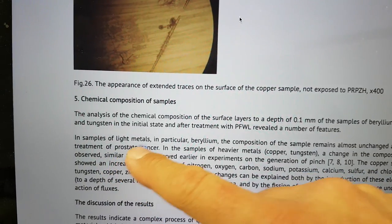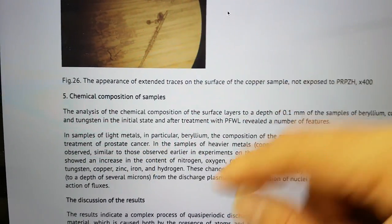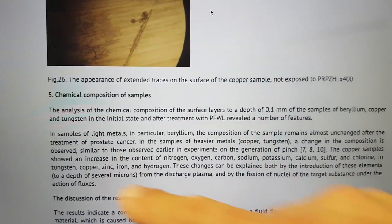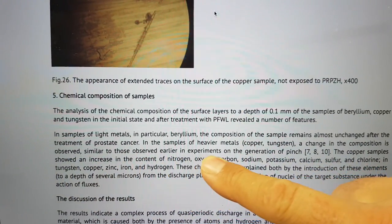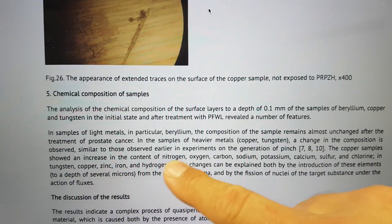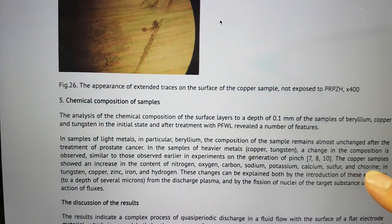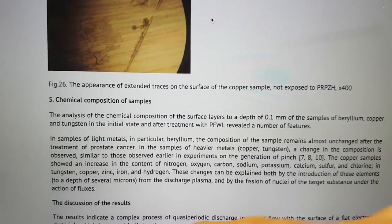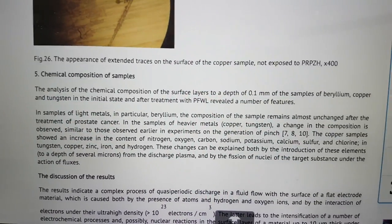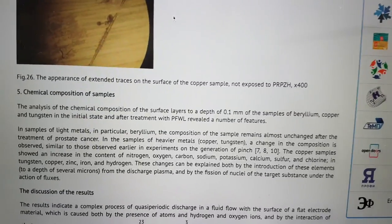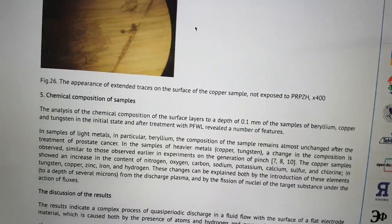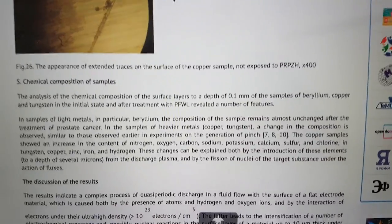This is a bad translation here, but in the samples of heavier metals, copper and tungsten, a change in the composition observed similar to those observed in early experiments. Copper samples showed an increase of nitrogen, oxygen, carbon, sodium, potassium, calcium, sulfur, chlorine, and so forth. This is kind of in line with the sort of finding some midway between light elements with the hydrogen in the water and the heavier elements.